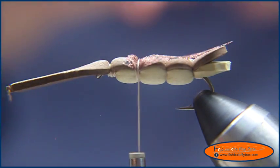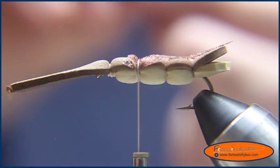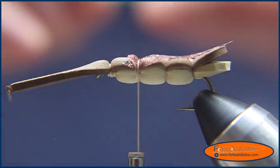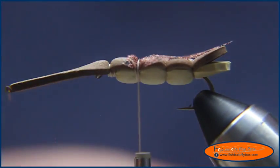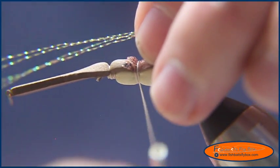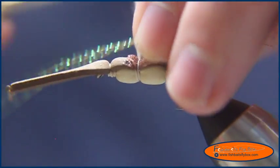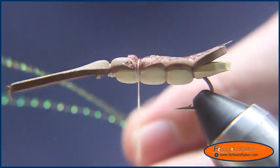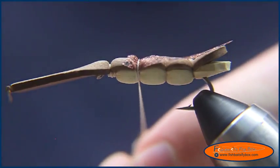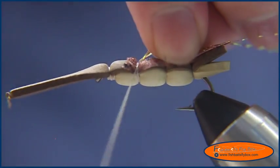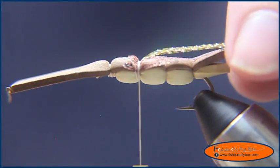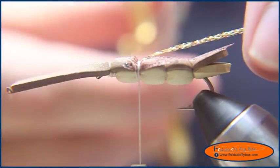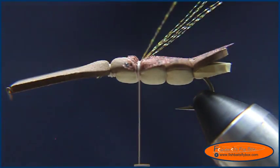I've got four strands of crystal flash, and this is root beer flavored. You can use any color you want. I know the original has either UV white or pearl, or UV pearl. And what we're going to do is we're going to fold it over the thread, and tie it down.